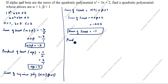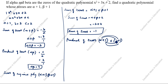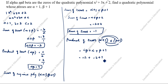Next, product of zeros: (alpha plus 1) into (beta plus 1). Expanding: alpha times beta, plus alpha times 1, plus 1 times beta, plus 1 times 1. That gives alpha beta plus alpha plus beta plus 1. Substituting: alpha beta is 2, alpha plus beta is minus 3, plus 1. So 2 plus minus 3 plus 1 equals 0. Product of zeros is 0.